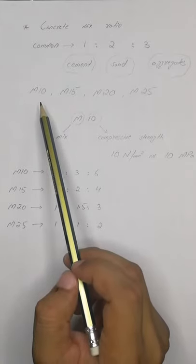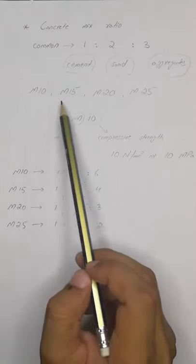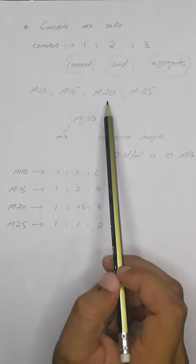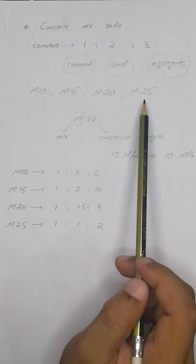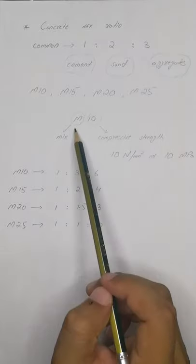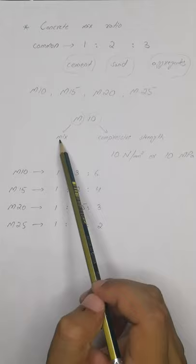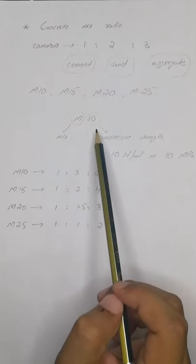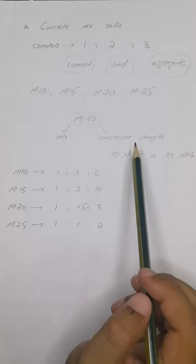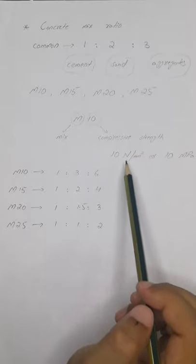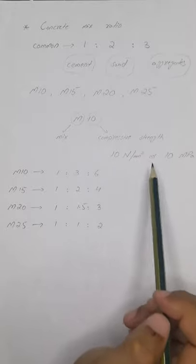Concrete mixes which we can make on our own are M10, M15, M20, M25. What does M10, M15, M20, or M25 mean? M stands for mix, whereas the number indicates the compressive strength of concrete at the 28th day, which is 10 Newton per millimeter square or 10 megapascal for M10.